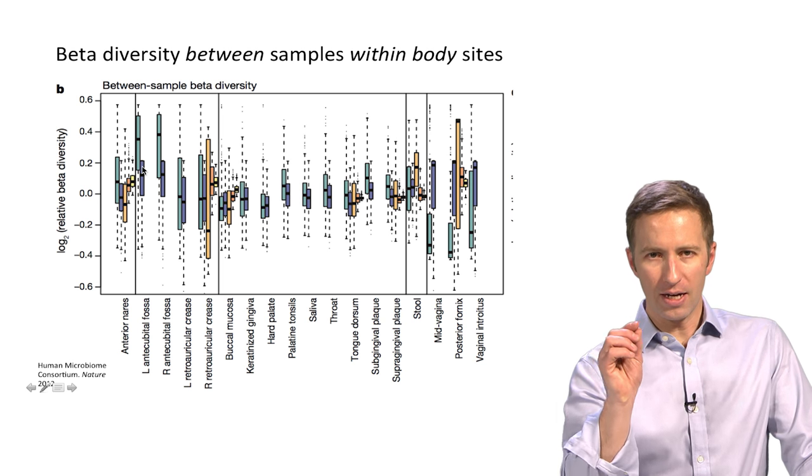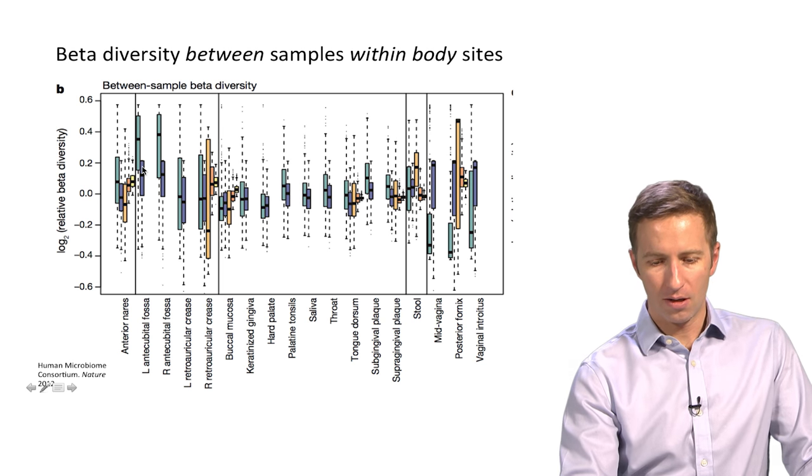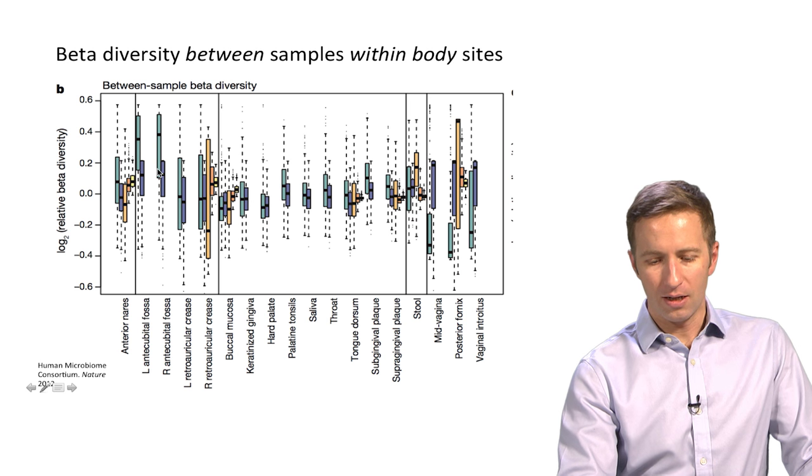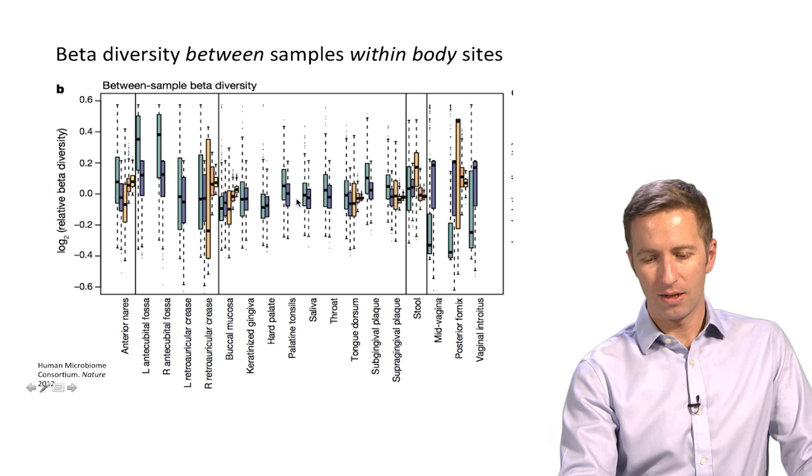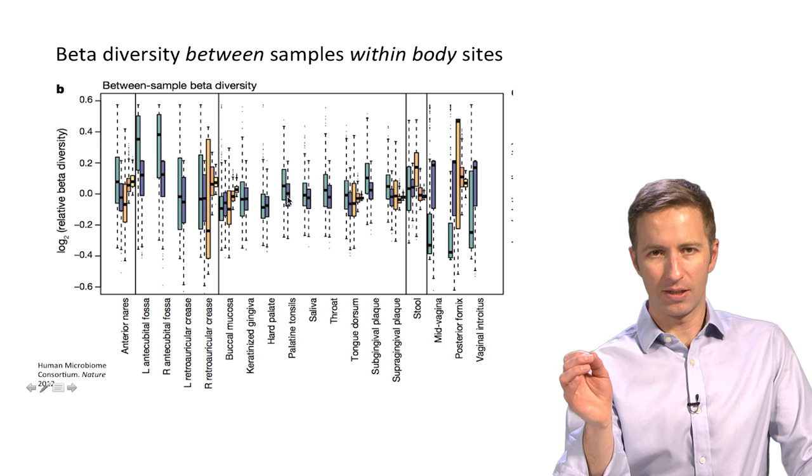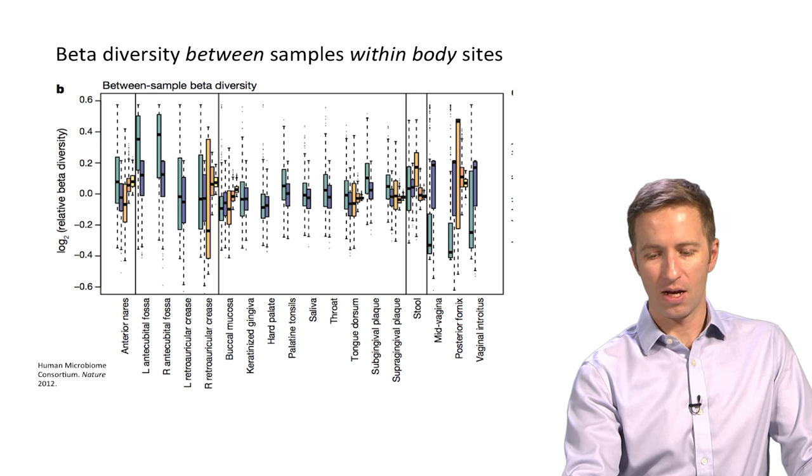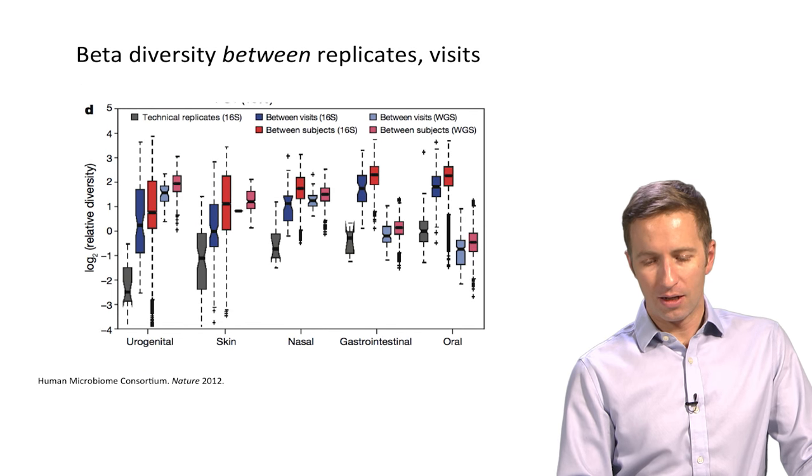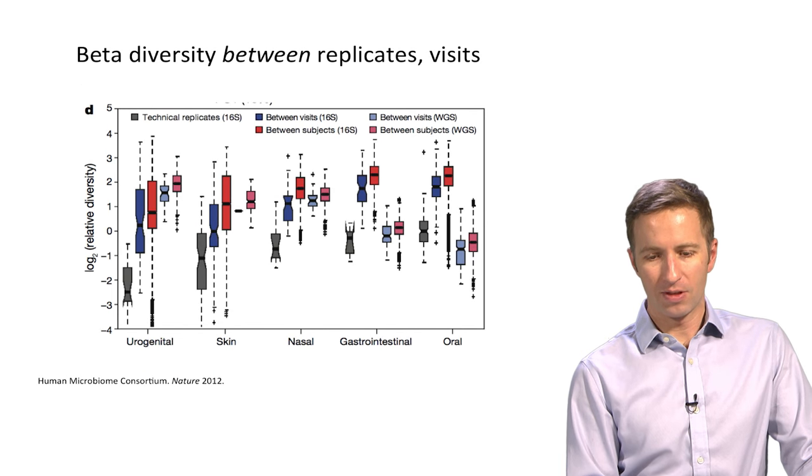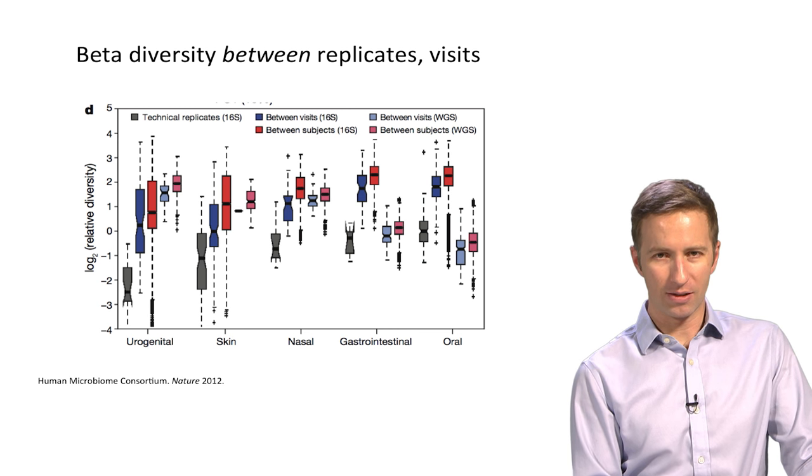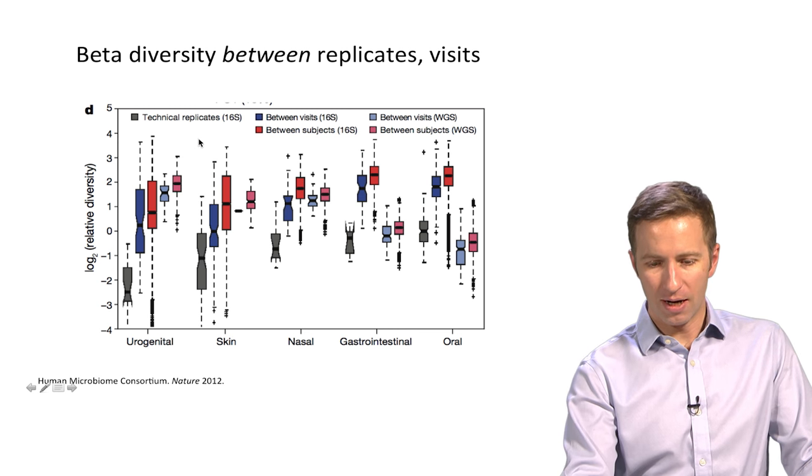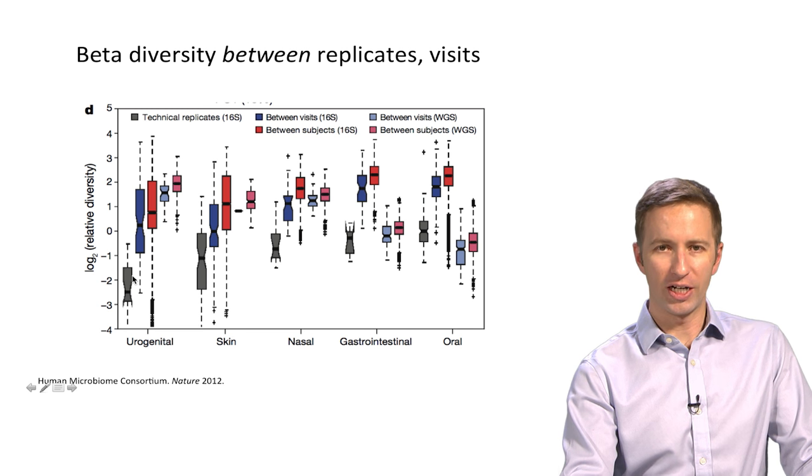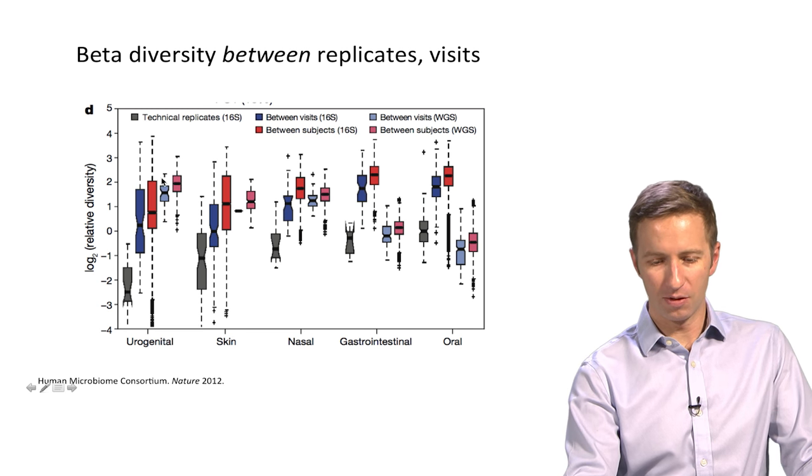So you see higher inter-sample distance on the skin within those body sites, then you see inter-sample distance or interpersonal difference in the oral body sites. Another nice figure examines the beta diversity between replicates and between different visits for people. Technical replicates fortunately have the lowest overall change between them, the lowest beta diversity.